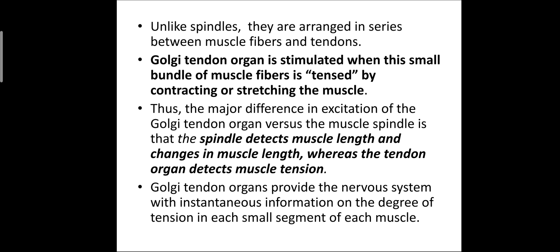The major difference in the excitation of Golgi tendon organ versus the muscle spindle is that the spindle detects the muscle length and changes in muscle length, whereas the tendon organ detects the muscle tension. Golgi tendon organ provides the nervous system with instant information on the degree of tension in each small segment of each muscle.